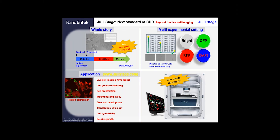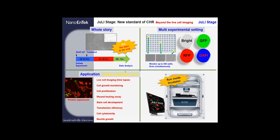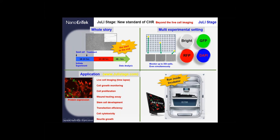JULiStage has Brightfield, Green Fluorescence, Red Fluorescence, and DAPI for measurement of your cells. There are other applications with JULiStage, and you can find various live cell imaging videos for those applications at the dedicated website, juliestage.com. Finally, JULiStage is compatible with many different types of plates, dishes, and slides. It works perfectly inside an incubator for as long as you would like to perform your experiments, and it will also work outside of the incubator.